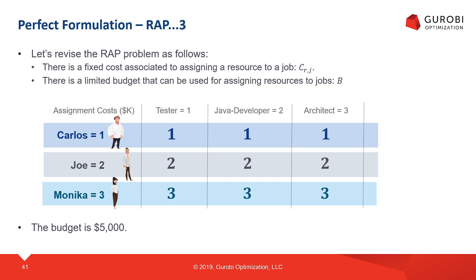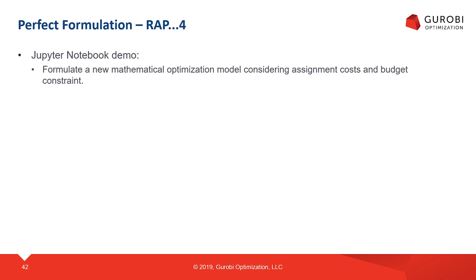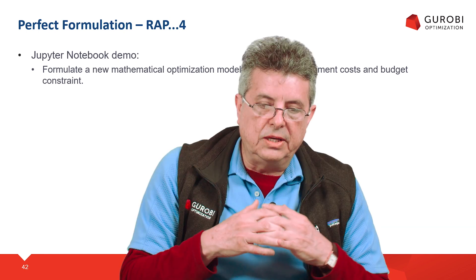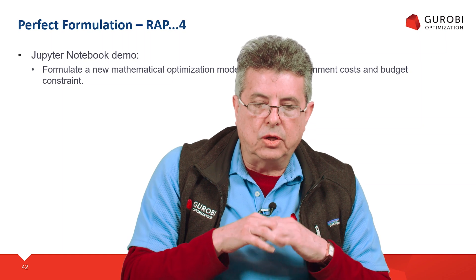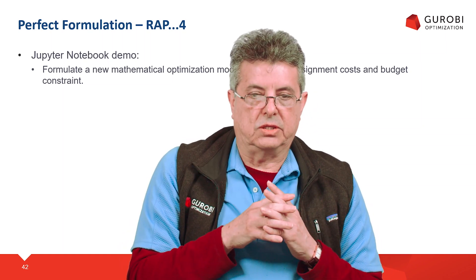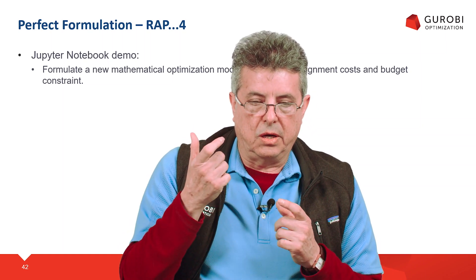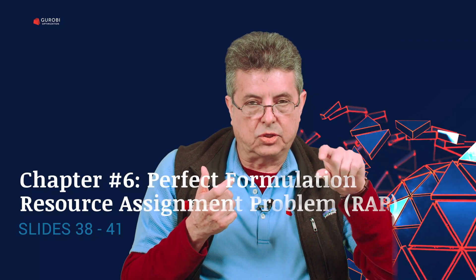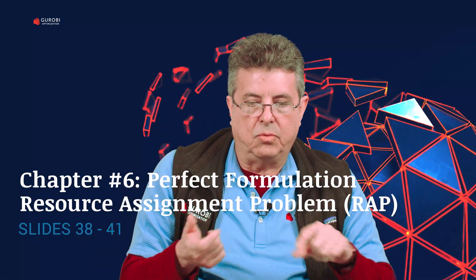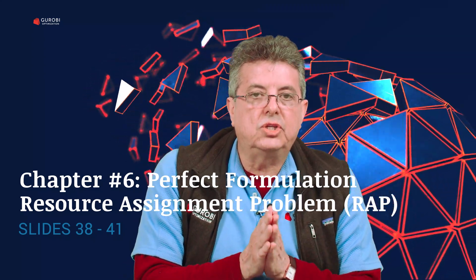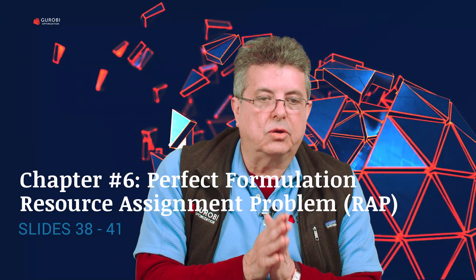What we are going to do now is give a demo in Jupyter Notebook where we extend the formulation of the linear programming problem to include this new budget constraint — the fixed cost of assigning a resource to a job with a spending limit. Let's switch to the Jupyter Notebook demo.